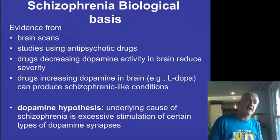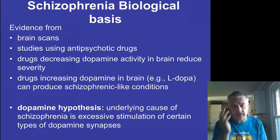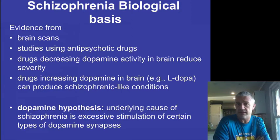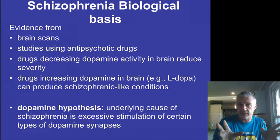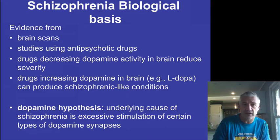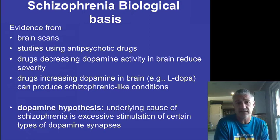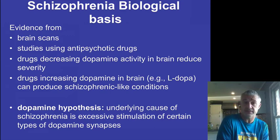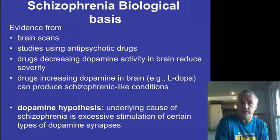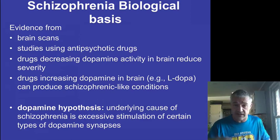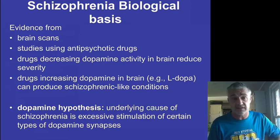Schizophrenia and some drug effects are definitely related to neurotransmitters. There's a lot of evidence that schizophrenia involves overstimulation of dopamine synapses. This is supported by the fact that drugs that decrease dopamine reduce severity, while drugs that cause an increase in dopamine can sometimes bring about schizophrenic conditions.